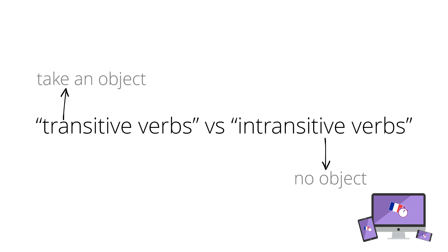An example is the verb to eat. If you say, 'I'm eating an apple,' this sentence uses an object — an apple — so it's transitive. If you say, 'I'm eating,' there's no object, so it's intransitive.